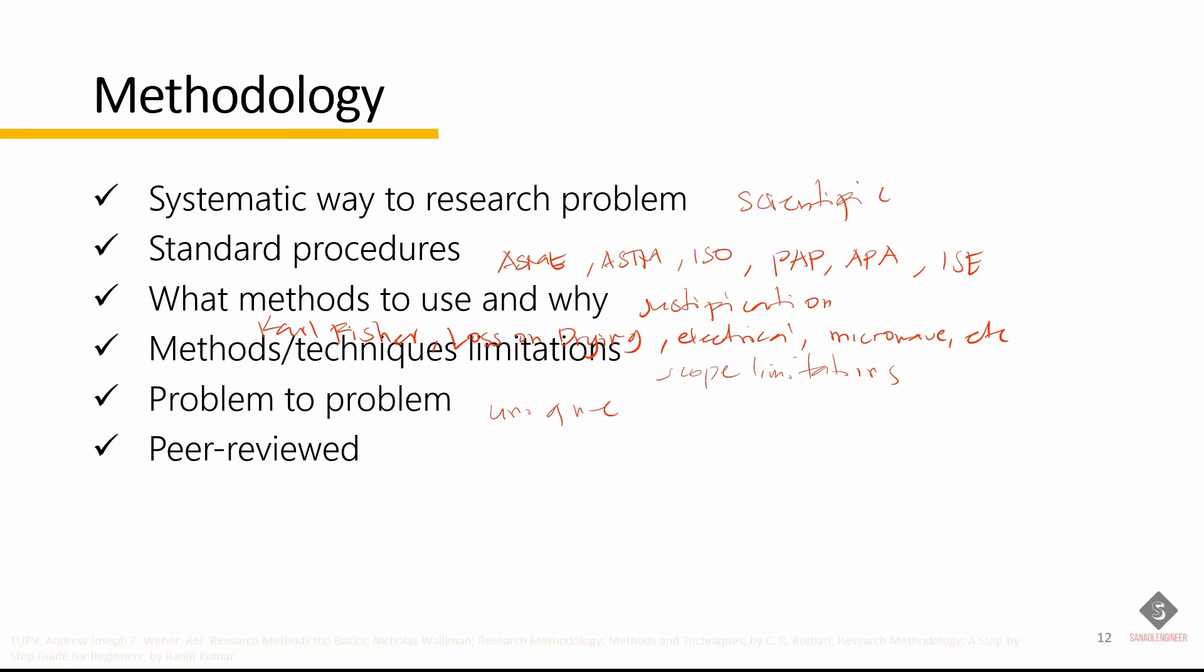In other words, it should be peer reviewed. Your methodology has to be scrutinized by a pool of experts. It has to be checked if you have a logical and achievable path in solving your research problem. So you see that research methodology has many dimensions and research methods constitute a part of the research methodology. The scope of research methodology is wider than that of research methods. When we talk of research methodology, we not only talk of the research methods, but also consider the logic behind the methods and explain why we are using a particular method or technique and why we are not using others.